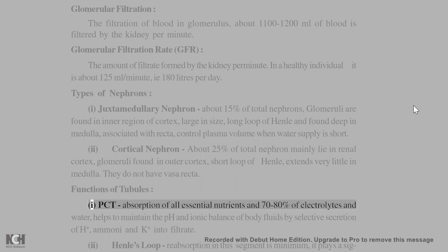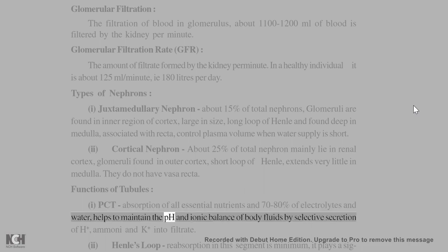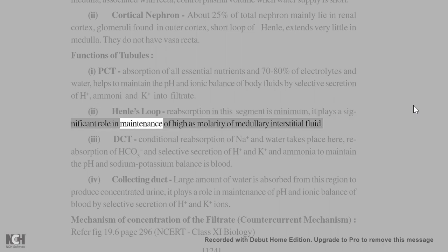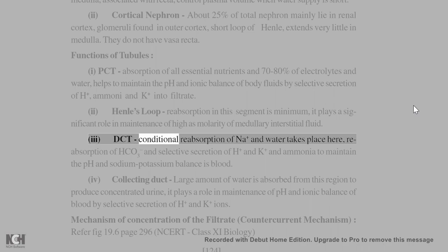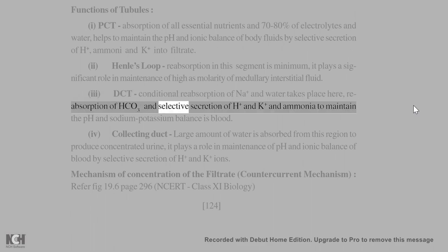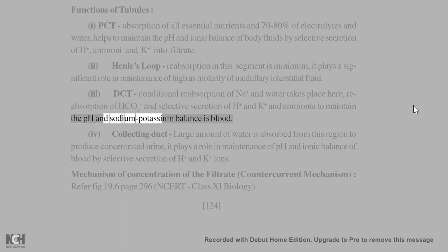Functions of tubules: 1. PCT — absorption of all essential nutrients and 70–80% of electrolytes and water; helps maintain pH and ionic balance of body fluids by selective secretion of H+, ammonia, and K+ into filtrate. 2. Henle's loop — reabsorption in this segment is minimum; plays a significant role in maintenance of high osmolarity of medullary interstitial fluid. 3. DCT — conditional reabsorption of Na+ and water; reabsorption of HCO3– and selective secretion of H+, K+, and ammonia to maintain pH and sodium-potassium balance in blood.